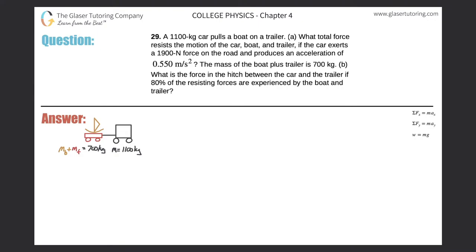Problem 29: A 1100-kilogram car pulls a boat on a trailer. Part A: What total force resists the motion of the car, boat, and trailer if the car exerts a 1900-newton force on the road and produces an acceleration of 0.55 meters per second squared? The mass of the boat plus the trailer is 700 kilograms.